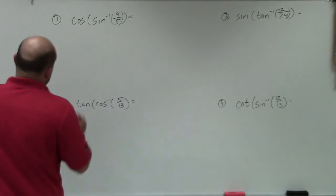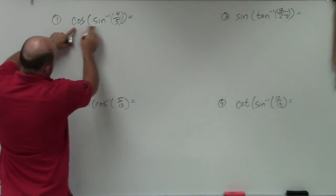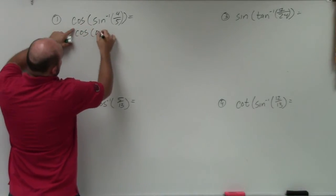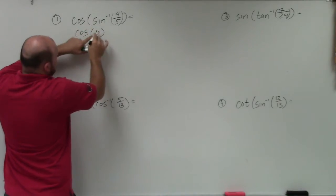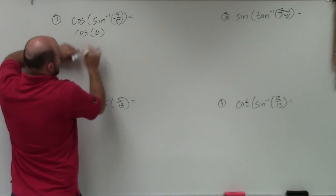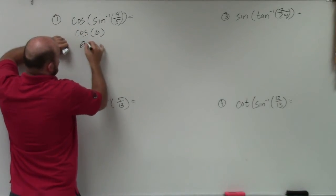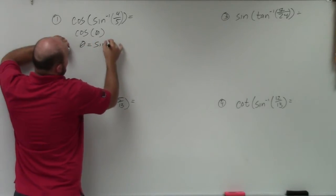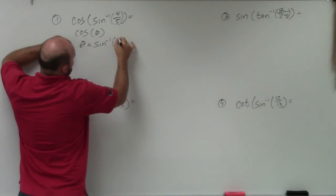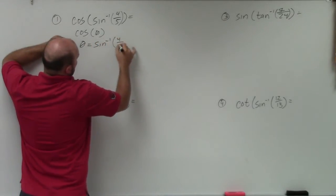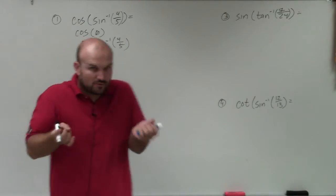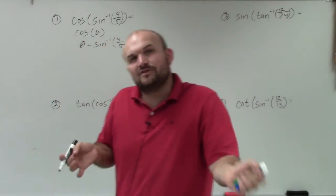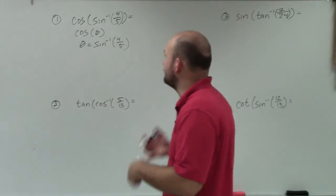How can I take the inverse sine of 4/5? Well, we don't actually necessarily have to evaluate for the angle. Because if we're going to evaluate the cosine of this, think of it as: we evaluate the cosine of theta. This represents theta. So we can say theta is equal to sine inverse of 4 over 5 — that's what we're trying to figure out.